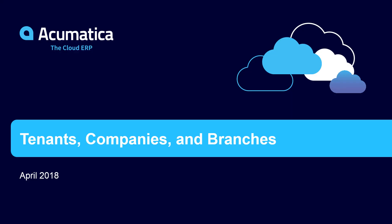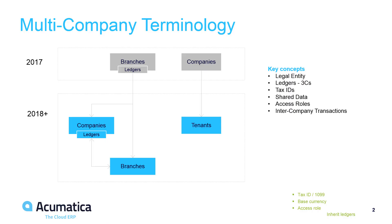Tenants, Companies, and Branches. Acumatica supports complex corporate structures involving multiple layers of independent companies, related companies, and branches. In this video, I explain key concepts and demonstrate creating a corporate hierarchy. To distinguish legal entities from reporting entities, Acumatica introduced a new object called a company and changed the name of the existing company to tenant.